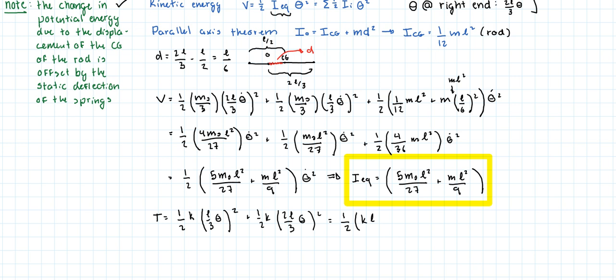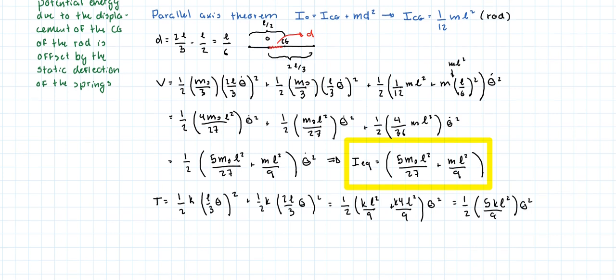Let's simplify this. We've got K L squared over 9 plus K times 4 times L squared over 9. So we've got K L squared over 9 theta squared, and so we get that the equivalent stiffness is equal to this guy over here. This concludes our example.